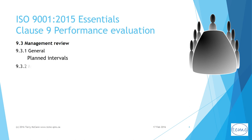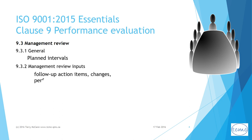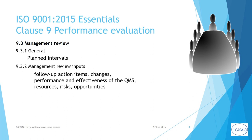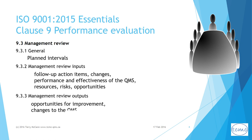Following a general introduction, the 9.3 subclause has two parts: one describing required inputs or agenda items, the other required outputs which should be documented as a record. Inputs for the agenda include follow-up action items, changes such as new customers, legislation, revision of ISO 9001, performance and effectiveness of the QMS, resources, risks and opportunities including opportunities for improvement. Documented output includes decisions and action items covering opportunities for improvement, changes to the QMS, and resource needs.